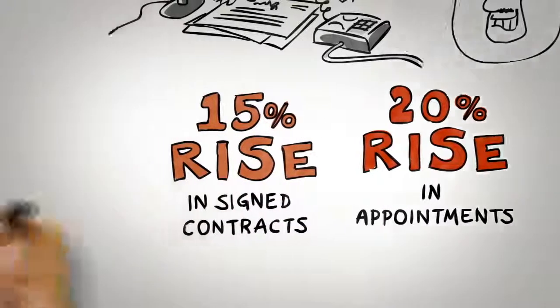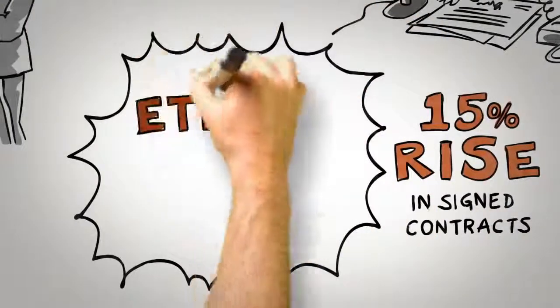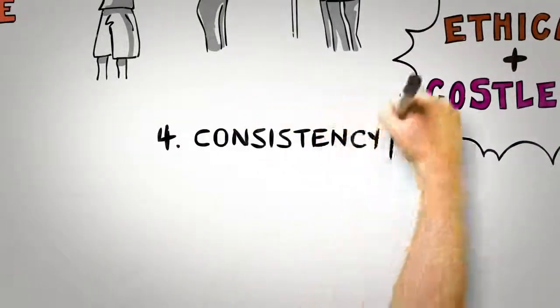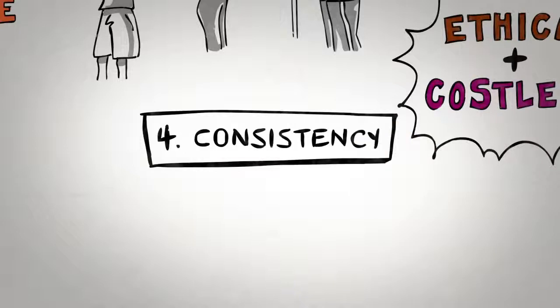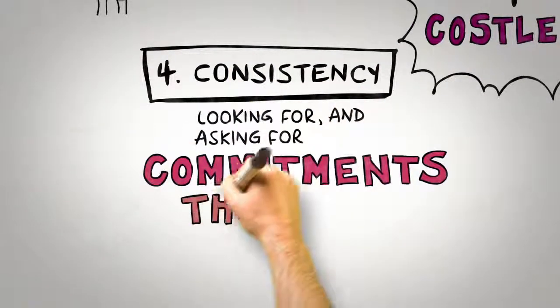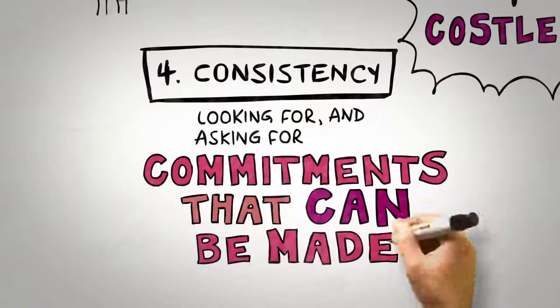The impact of this expert introduction led to a 20% rise in the number of appointments and a 15% increase in the number of signed contracts. Not bad for a small change informed from persuasion science that was both ethical and costless to implement. The next principle is consistency. People like to be consistent with the things they have previously said or done. Consistency is activated by looking for and asking for small initial commitments that can be made.